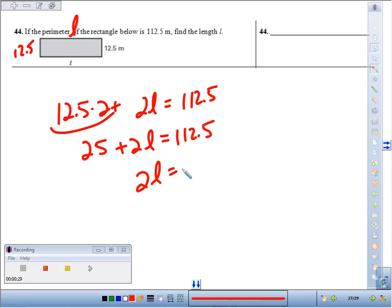Then we'll divide by 2, and we'll get the length of the rectangle is 43.75, and our measurement was in meters.